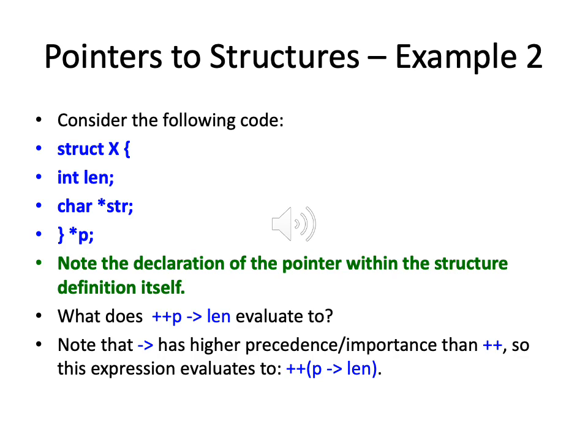The question is: what does ++p->length evaluate to? Again the issue is operator precedence. Looking at the operator precedence chart from chapter two, the arrow operator has higher precedence than ++. Arrow is on level one and ++ is on level two. So the effect of this statement is ++(p->length) — it gets the length component using the pointer and then increments it by one.